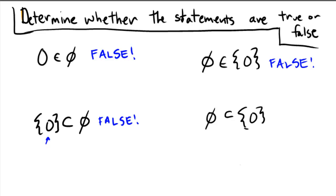Finally, down here, we have: the empty set is a subset of the set containing zero. The empty set has no elements in it, so there's no way that there would be an element on the left that would not be contained on the right. So we have our first true statement. Also, since this is proper subset (not equal to), we needed to make sure that the set on the right actually did contain something not on the left — and zero is an element on the right but not on the left.